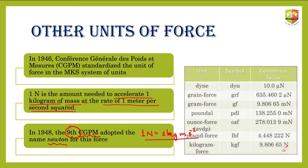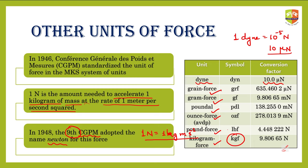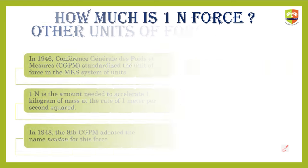Other units of force that were previously used include the dyne, where 1 dyne equals 10 to the power minus 5 newton (or 10 micronewton). There was also grain force, gram force, poundal, ounce force, pound force, and kilogram-force (kgf). The kgf is still used in many application areas — 1 kgf equals approximately 9.80665 newton, which is the force earth applies on a 1 kg object.